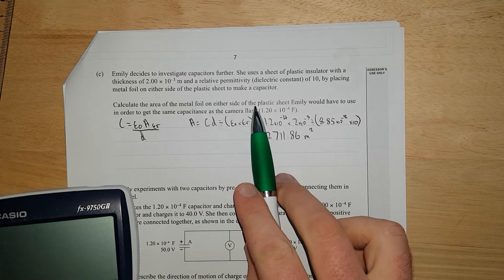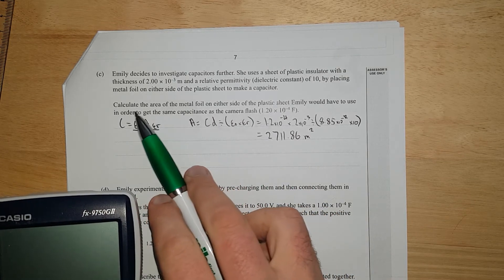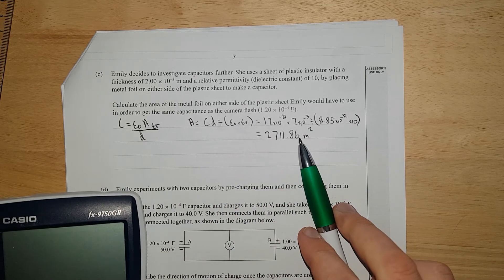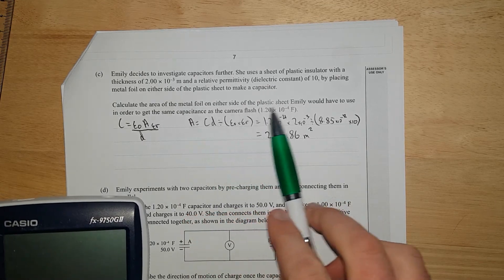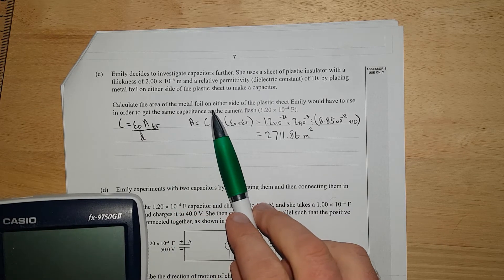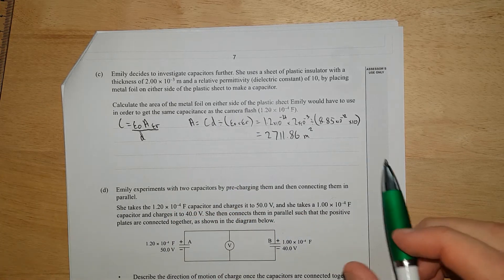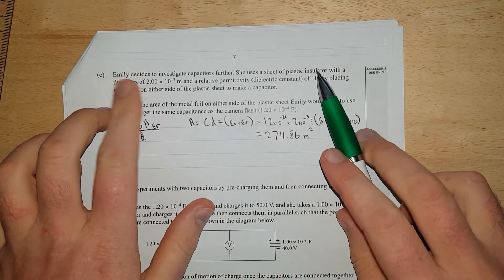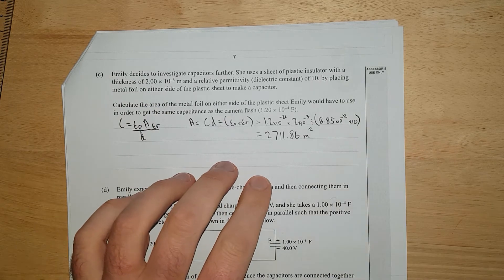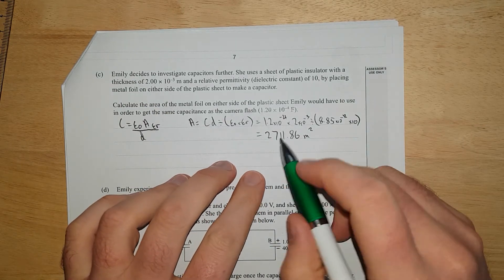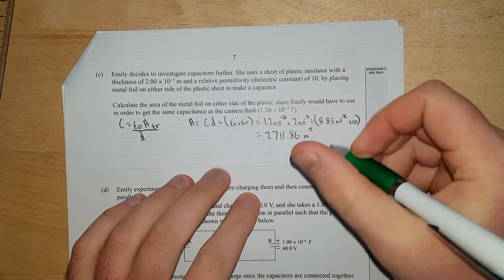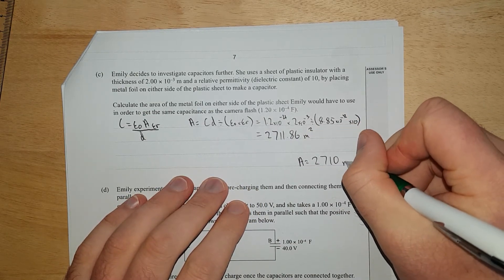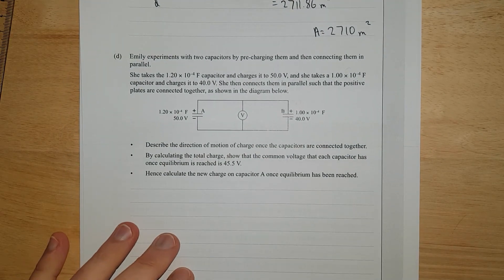I don't know whether it's asking for the total area. I'll look at the answers. It seems mine's correct. It sounds like just one side. 3 significant figures. A should be equal to 2,710 meters squared. Cool.